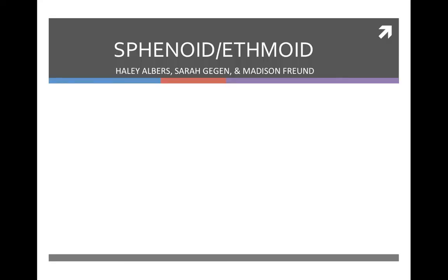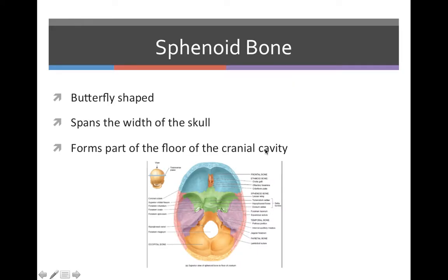Hello, I'm Haley Albers along with Sarah Geegan and Madison Friend, here to talk about the sphenoid and ethmoid bones of the skull. The sphenoid bone is a butterfly-shaped bone that spans the width of the skull. It forms part of the floor of the cranial cavity. In this diagram, the sphenoid bone is the green section of the skull.